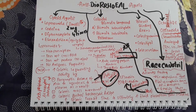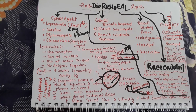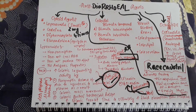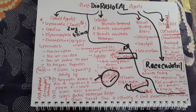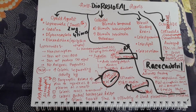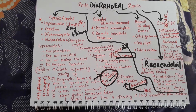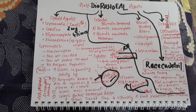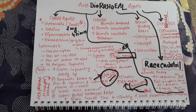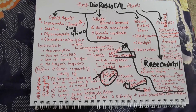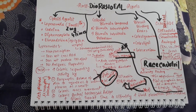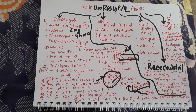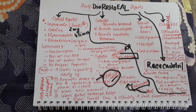Acute watery diarrhea lasts less than 14 days and may occur due to some infectious agent, with severe dehydration being a key feature. In the case of dysentery, there is blood passing through the stool, which may be caused by different types of bacterial agents causing bloody diarrhea.